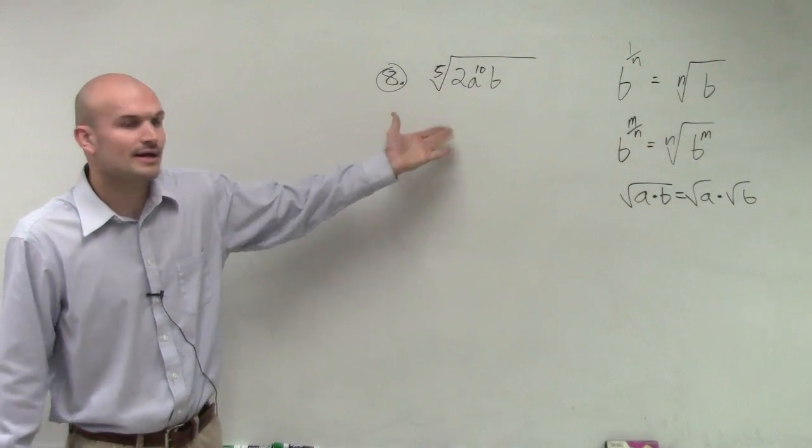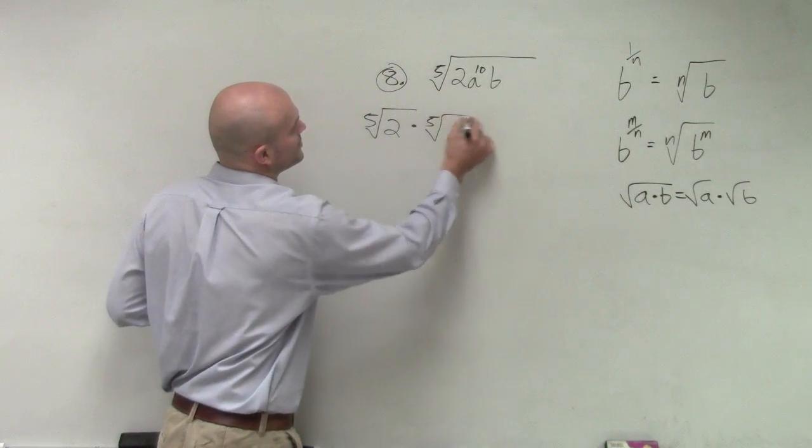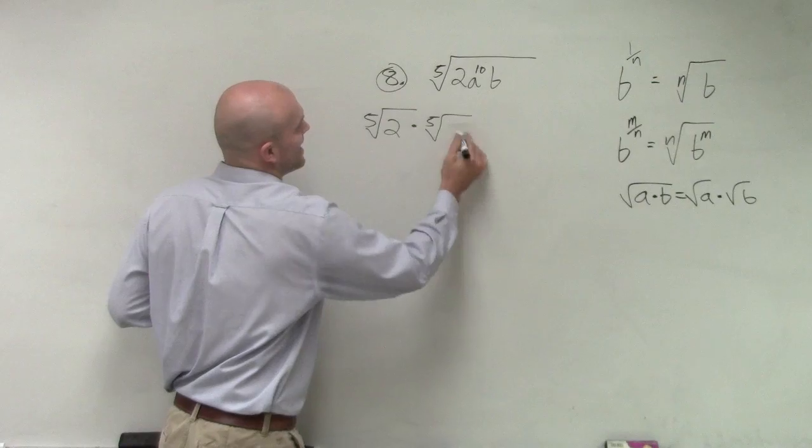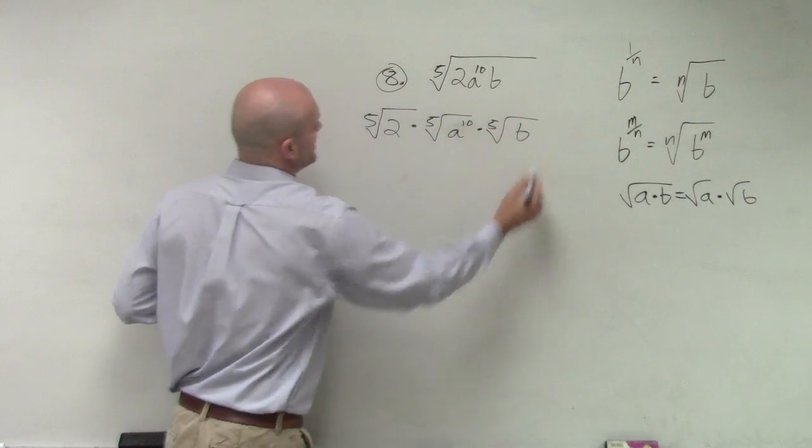So here I can break this up into the fifth root of 2 times the fifth root of a to the tenth times the fifth root of b.